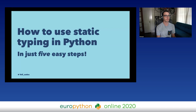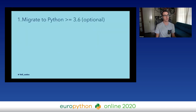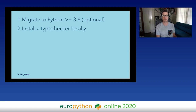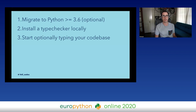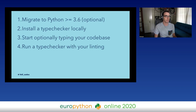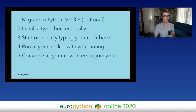To wrap up: how to use static typing in five easy steps. First, migrate to Python 3.6 or greater — this is actually optional since you can use type comments in any version, but you should migrate to Python 3 anyway. Second, install a type checker locally — I don't care which one, but integrate it into your editor so it runs automatically when you write or save a file. Third, start optionally typing your codebase — start with the most complex or easiest to understand function; don't try to do it all at once since it's intentionally a gradual process. Fourth, run the type checker with your linting and put it in CI. And finally, convince all your coworkers to join you — if you need help convincing them, feel free to send them my way.